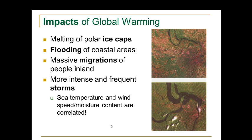What are the impacts of global warming? Melting of polar ice caps, flooding of coastal areas, massive migrations of people inland, and more intense and frequent storms. Sea temperature, wind speed, and moisture content are correlated. Remember, the oceans regulate the climate, so if they warm up, it's not surprising that other things are going to change as well.